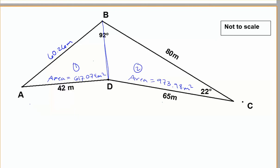One of the questions that's asked of us is to find the total area, because we need to know how much grass seed is needed to make grass throughout the park. So we found the area of triangle 1, 617.074, and we found the area of triangle 2 to be 973.98 meters squared.